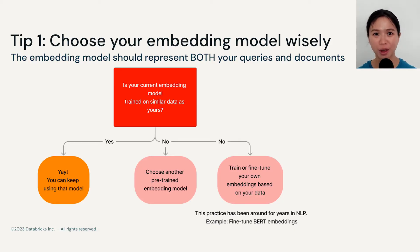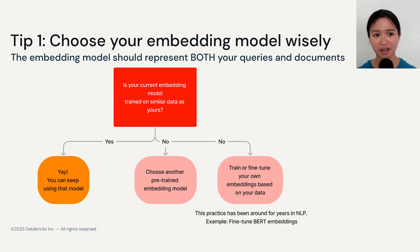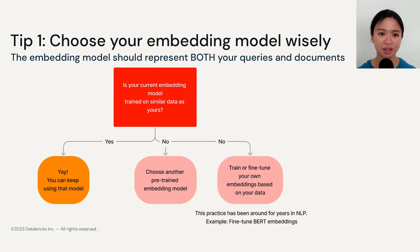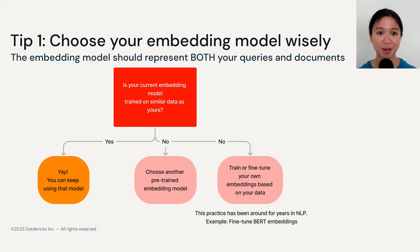Tip one: you should absolutely choose your embedding model wisely. A proxy question you can ask yourself is whether your embedding model is currently trained on similar data as yours. If the answer is yes, then good news — you can keep using the embedding model. But if the answer is no, you have two options: first, look into using another pre-trained embedding model; or second, either train your own embeddings or fine-tune your embeddings based on your data set. The latter approach has been around in the field of NLP for years — it's a very established approach, and we used to talk about fine-tuning your own BERT embeddings all the time before the hype of ChatGPT.